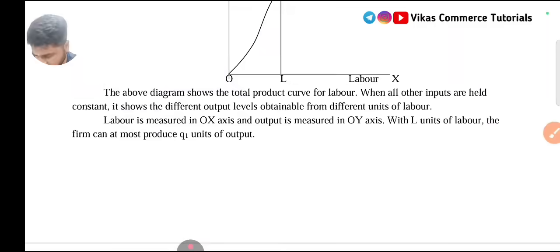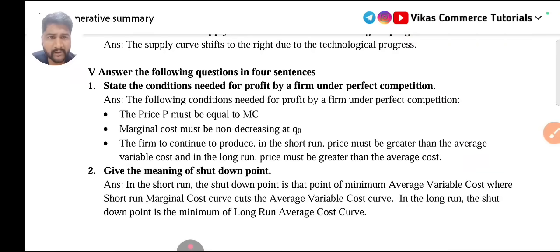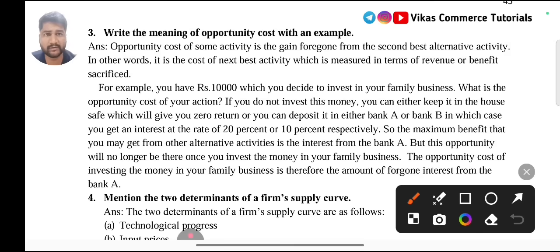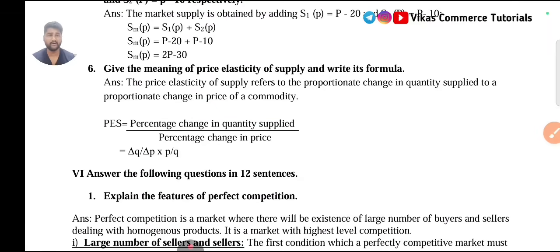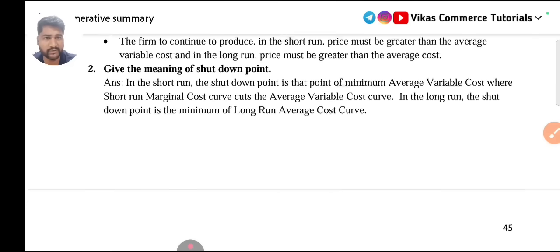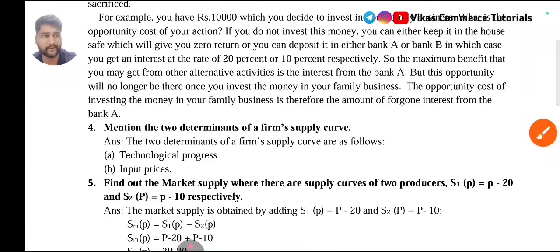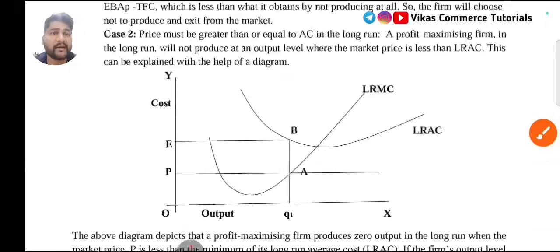Moving to Chapter 4, Theory of the Firm under Perfect Competition. For two marks from this chapter: the meaning of shutdown point is already given in four marks, as is break-even point and normal profit. So you need not study question number two. If you want to study something, study opportunity cost — meaning with an example — this will be one of the most important questions. Determinants of firm supply curve are already given in four marks. So the important questions are: determinants of supply curve, opportunity cost, and meaning of shutdown point.